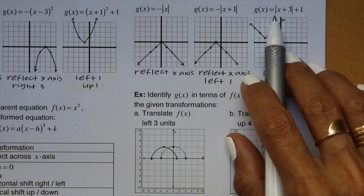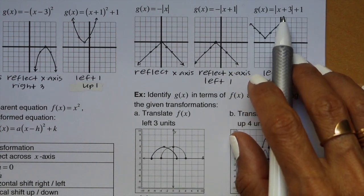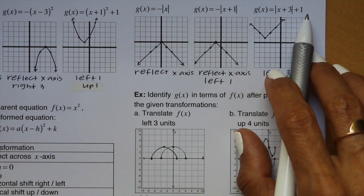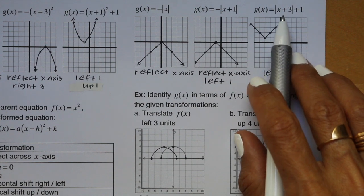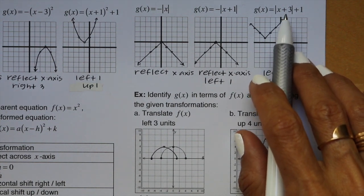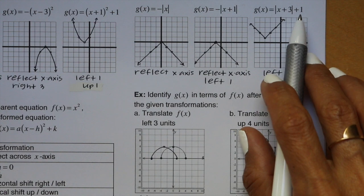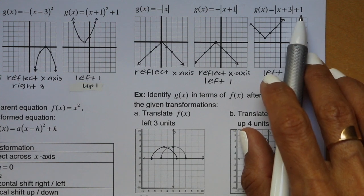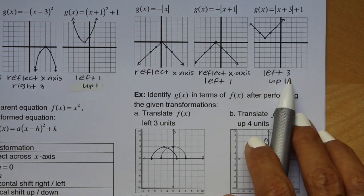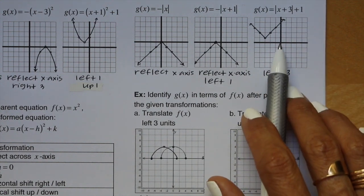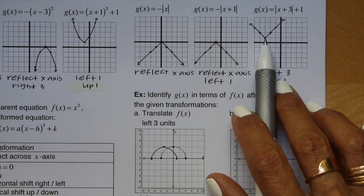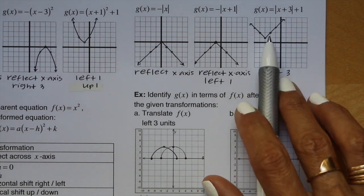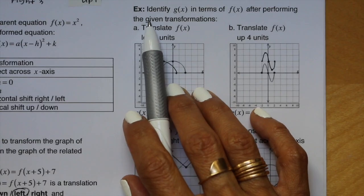This example says g of x equals the absolute value of (x plus 3) plus 1. The plus 3 is inside the absolute value, so it's a horizontal movement — it goes left 3. The number at the end is your vertical shift — it goes up 1. So we have left 3 up 1. Start by moving the vertex left 3 up 1, put a dot, and draw your V from there.